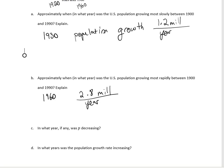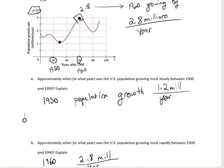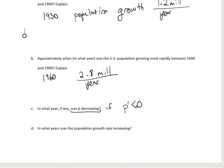Was the population ever decreasing? The population would decrease only if the derivative was negative. Since all values on the graph are positive, the overall population never declined — it just slowed down or sped up. So the answer is: never.